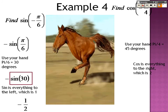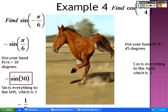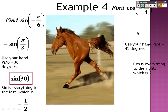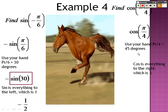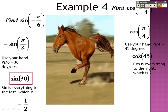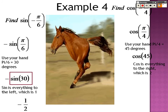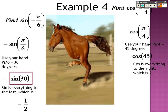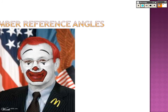Over here we have cosine of negative pi over 4. That's the same as just saying cosine of pi over 4. Pi over 4 is 45 degrees, which is the middle finger. Cosine is everything to the right, so square root of the right over 2, or root 2 over 2, is the answer for that one.